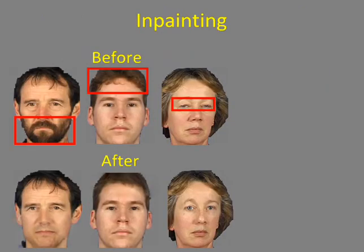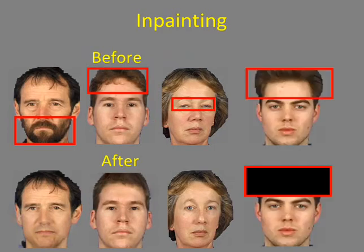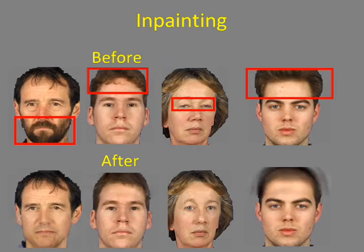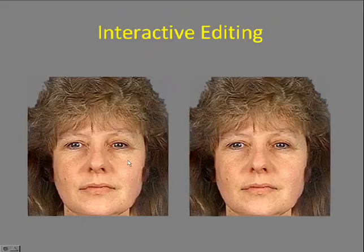We can also replace regions of real faces, as shown in these examples. In each case, the region indicated by the red box is replaced. Our method hypothesizes a global model based on the remaining observed image and then adds new patches over this region. We can use this trick to correct synthesized models. Here is an example of a synthesized image with a flaw on the cheek — selecting this region causes our system to replace it.